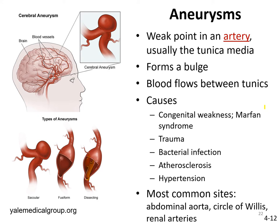There are various causes of aneurysms. There can be a congenital weakness where the connective tissue of the vessel wall is weak, which happens mainly in Marfan syndrome and other connective tissue disorders. It can also happen due to trauma, sometimes bacterial infection, and it can happen in atherosclerosis or hypertension. The most common sites where aneurysms are severe would be the abdominal aorta — where blood pressure is really high — the circle of Willis, which has arteries that supply the brain, and the renal arteries that supply the kidneys.